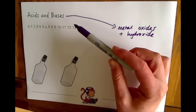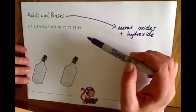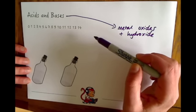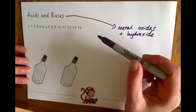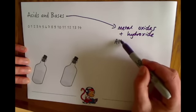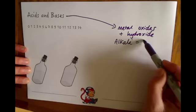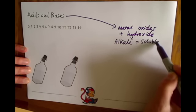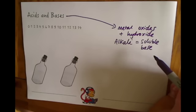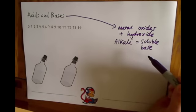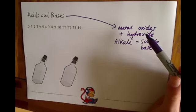Now, where does the term alkali come from? Alkali is very specifically a soluble base, so if a base dissolves in water to make a solution, we can then call that an alkali. So an alkali is a soluble base. If you dissolve a base in water and it is in solution, you can then call it an alkali. Otherwise, we just call it the generic word base.